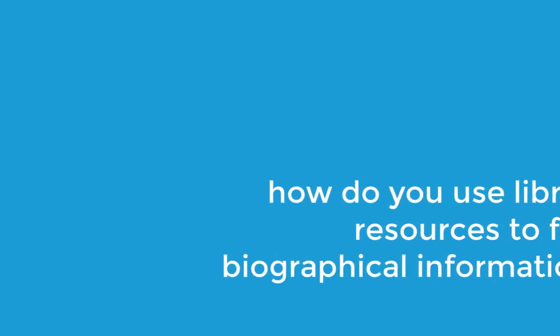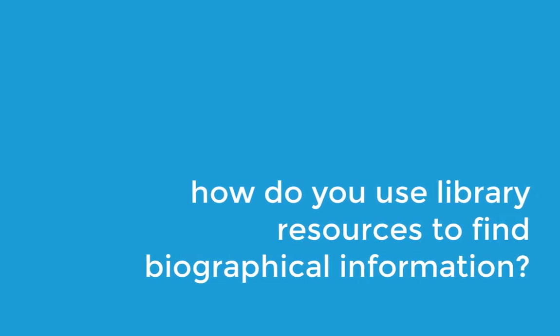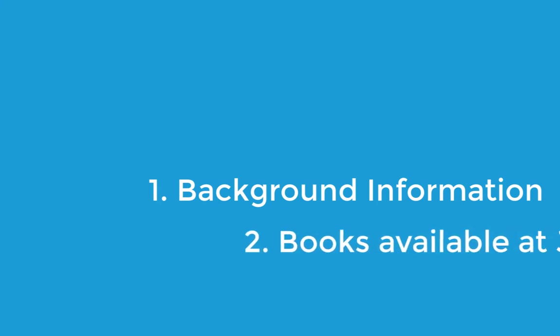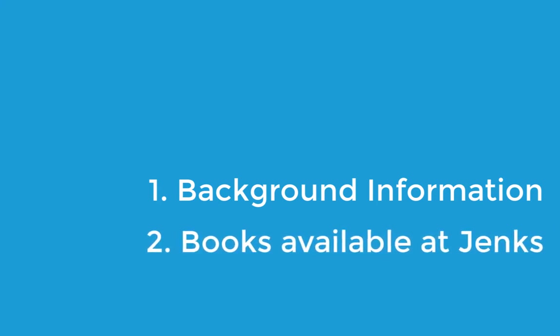Hello. In this video you'll learn how to use library resources for finding information on your individual. There are two primary resources that can help you out. The first is a bit more basic — background research in the form of encyclopedias and dictionaries — and the second will jump into the Noble Catalog for searching for books on your particular individual.